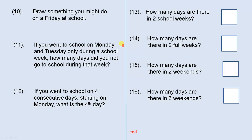If you went to school on Monday and Tuesday only during a school week, how many days did you not go to school during that week? If you went to school on four consecutive days starting on Monday, what is the fourth day?